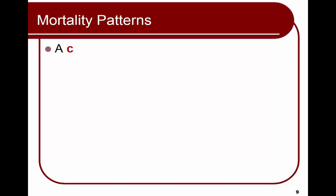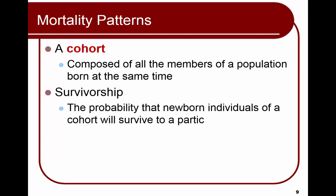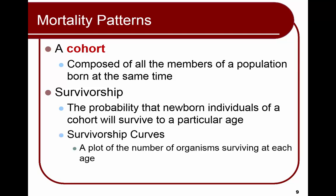When we look at mortality patterns, the key vocab term is cohort — all the members of a population born at the same time. We also look at survivorship: the probability that members of a cohort will survive to a particular age. We examine this through survivorship curves, which are plots of the number of organisms surviving at each age.